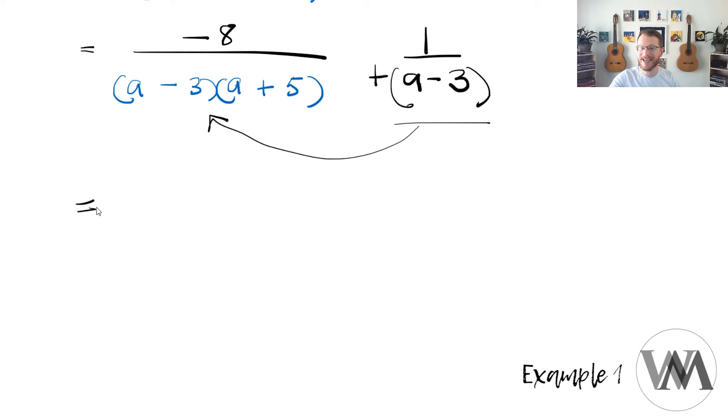So in this case, I'm going to do the following. Since this is already the lowest common denominator, I'm going to keep -8 as -8. Since a minus 3 is present here and there, I'm only going to multiply 1 with a plus 5, plus 1 times a plus 5, over my common denominator, a minus 3, a plus 5.